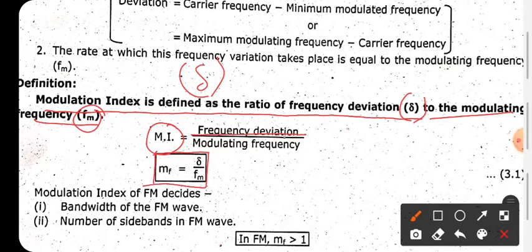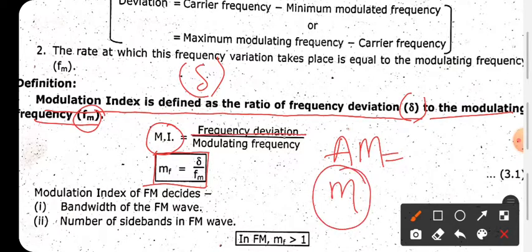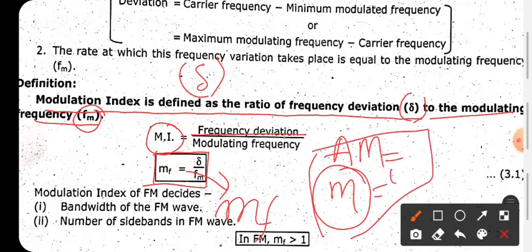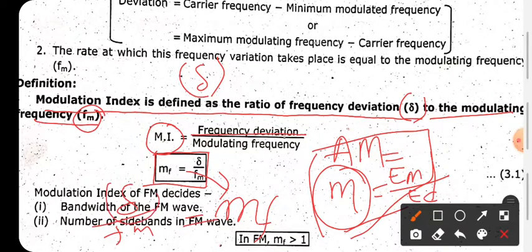In AM (amplitude modulation), the modulation index is represented by 'm', and it is defined as the amplitude of the modulating signal upon the amplitude of the carrier signal. For FM, the modulation index is represented as δ upon FM, where δ is the frequency deviation and FM is the modulating frequency.